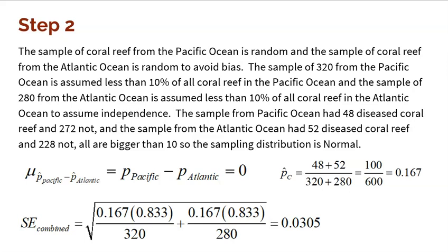Now we need to describe the mean and standard error of the sampling distribution. The mean of all possible differences between the Pacific and the Atlantic Ocean — some differences will be positive, some negative — but I'm going to assume the mean is zero. Because if the null is true and these two proportions are equal, the mean of the sampling distribution is zero.